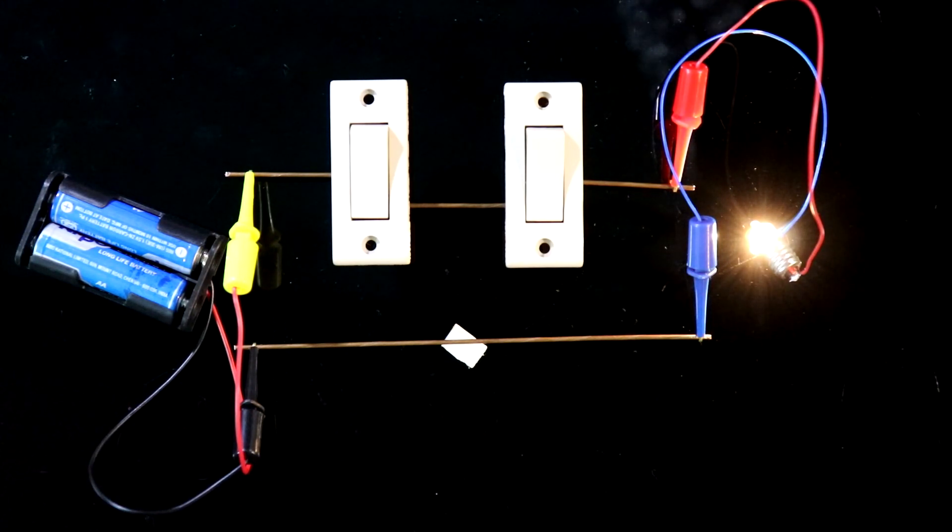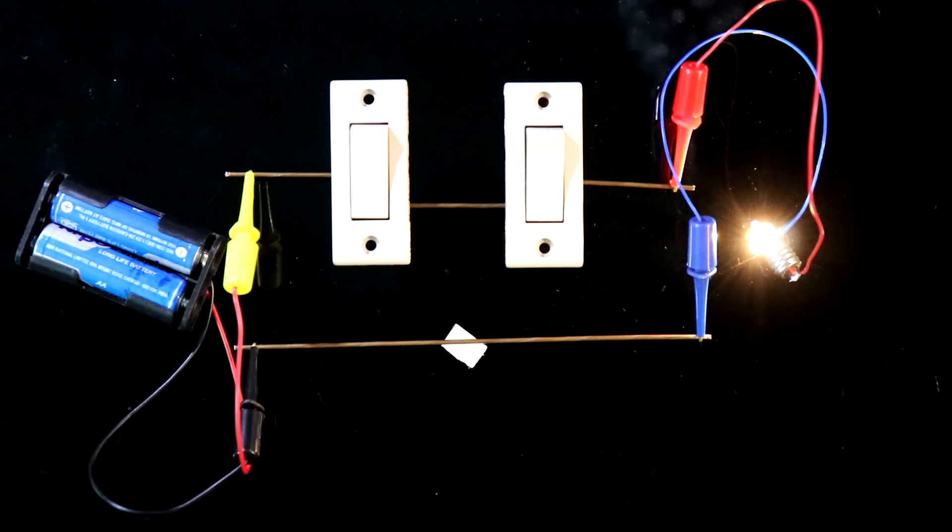So this is the basic circuit of an AND gate. So guys, this is all for today. Thanks for watching.